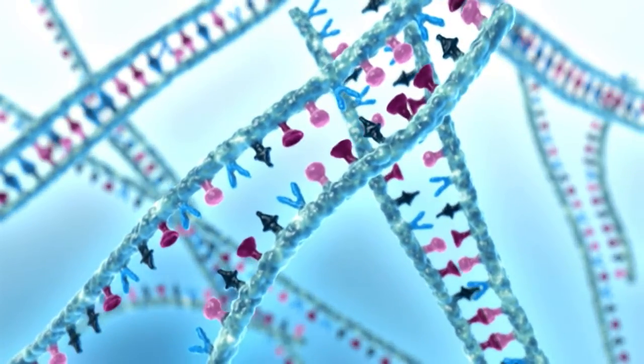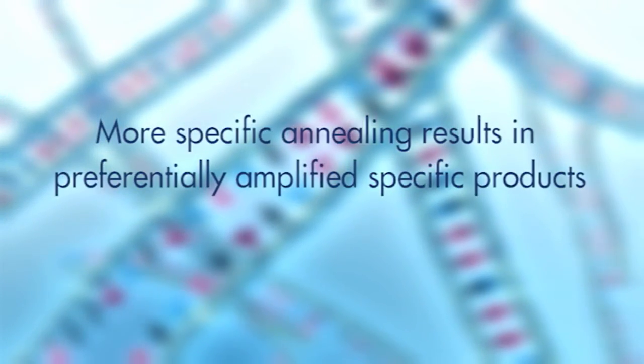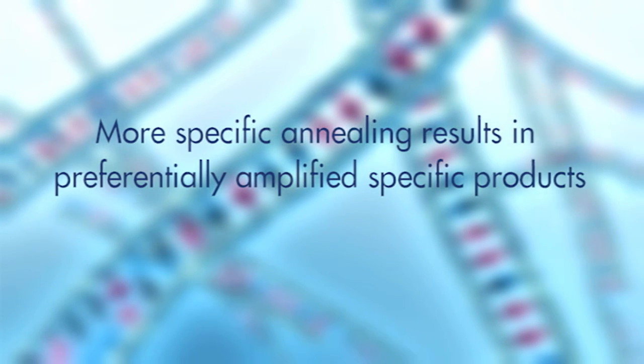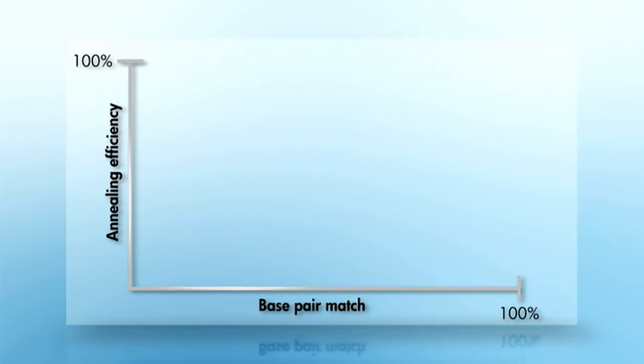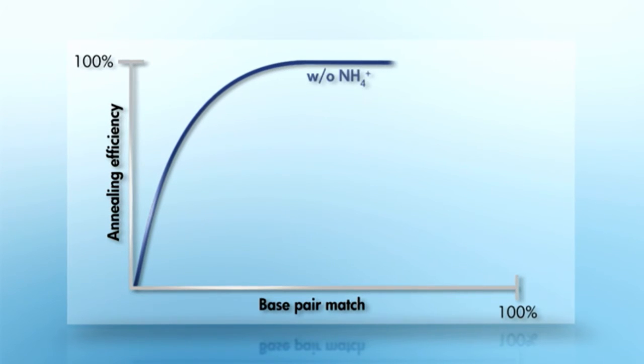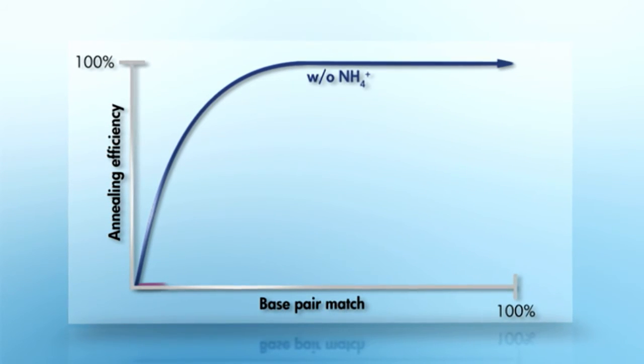QIAGEN's dual cationic formulation of K+ and NH4+ ions results in preferentially amplified specific products. Standard PCR buffers that do not contain ammonium ions stabilize both specific and non-specific primer annealing.